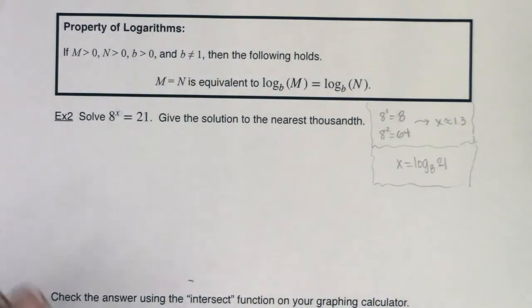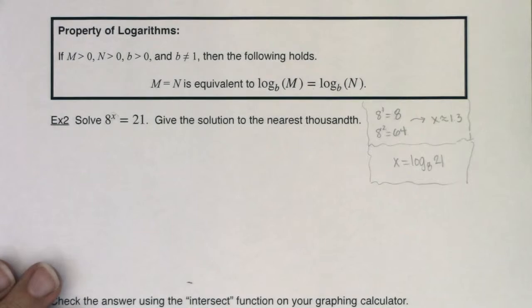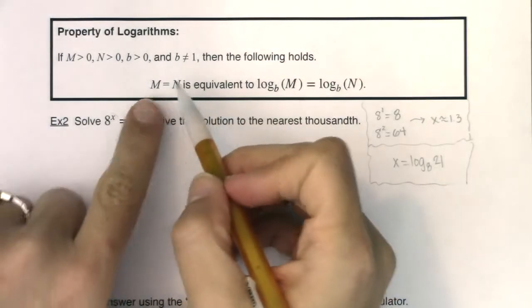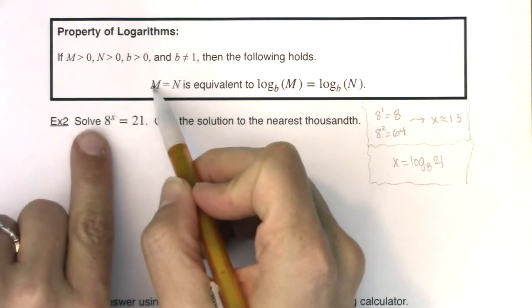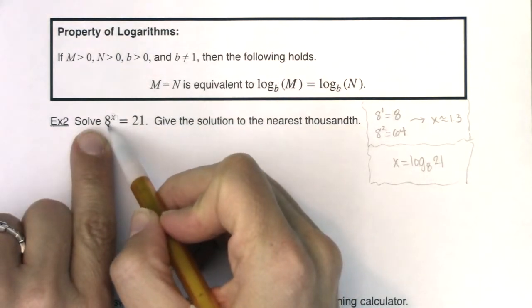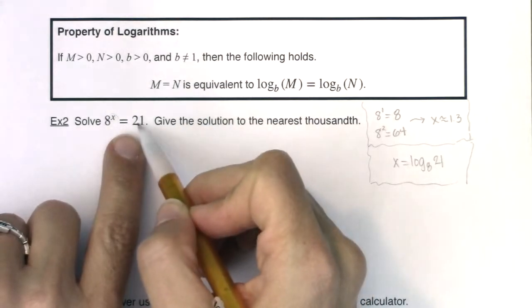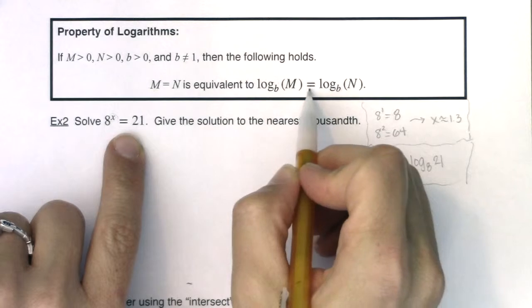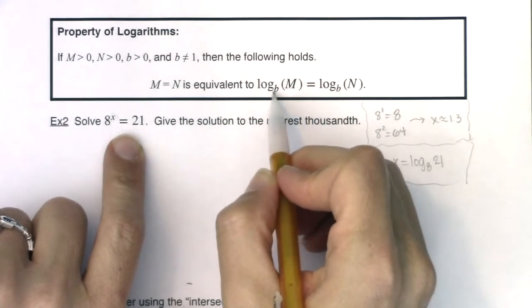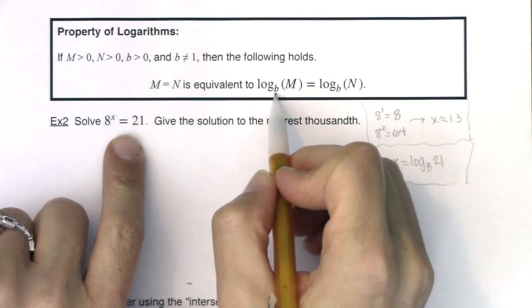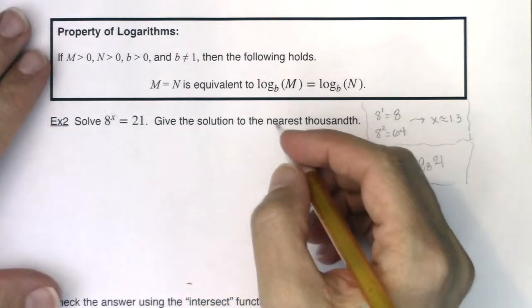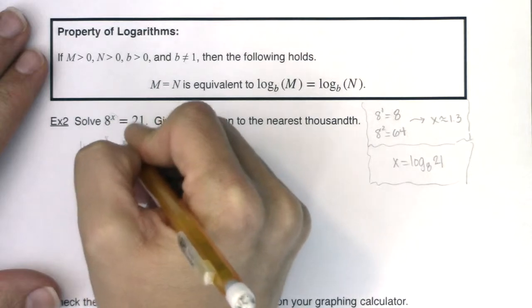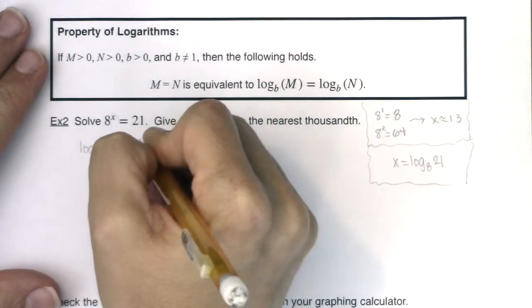So I'll just approach this problem initially deciding that I want to use the log button. And you can use either one. It's not going to make much of a difference in the number of steps. It's just what button you want to push. So with that, let me reposition my paper. Here we go. This property says if two things are equal, if m, which I'm going to call 8^x here, is equal to n, which I'm going to call 21, then I can log both sides of that equation and keep the equal sign. And I can choose any base I want. So I'm going to opt for common log.